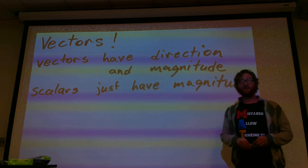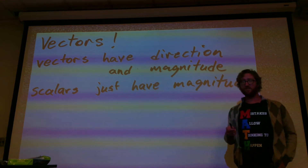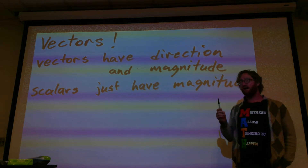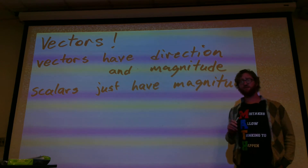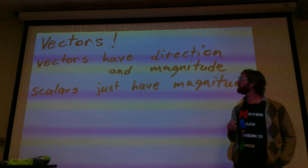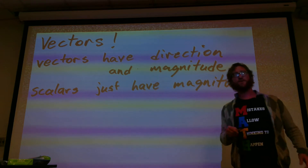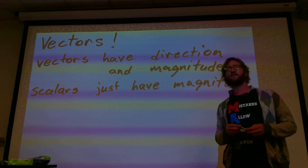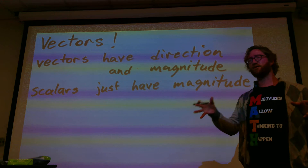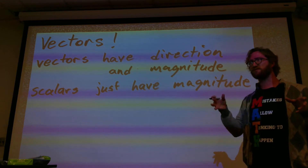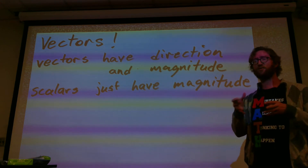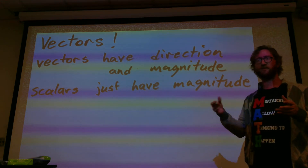When you do the cross product, that actually produces a vector — a vector that is perpendicular to the two vectors that you cross. So you can't do a dot product and then try to cross that with something, because you can only cross two vectors; you can't cross a scalar and a vector.